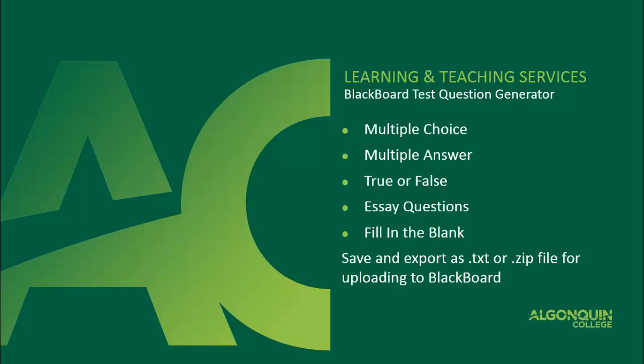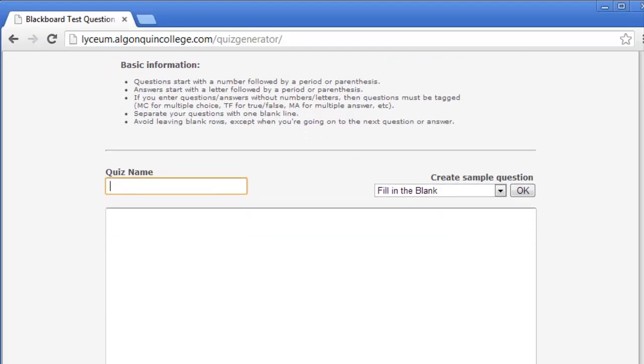When you're finished, the test question generator will export a .txt or .zip file that can be uploaded to Blackboard. Blackboard automatically turns this file into an interactive form that students will be able to complete, but there are precise formatting rules that must be followed so that Blackboard can properly convert the files.